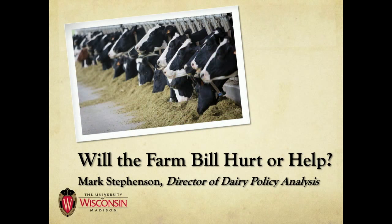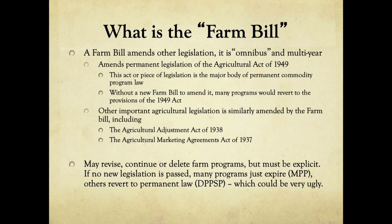Let's start with what the process is and what the farm bill is. We use this term loosely for this package of legislation that comes around about every five years. It is a piece of legislation that at its core is amending other pieces of legislation, and sometimes adding new legislation to the package. It's also called an omnibus bill, meaning we're packaging a whole bunch of bills into one and passing it in a single stroke through Congress.